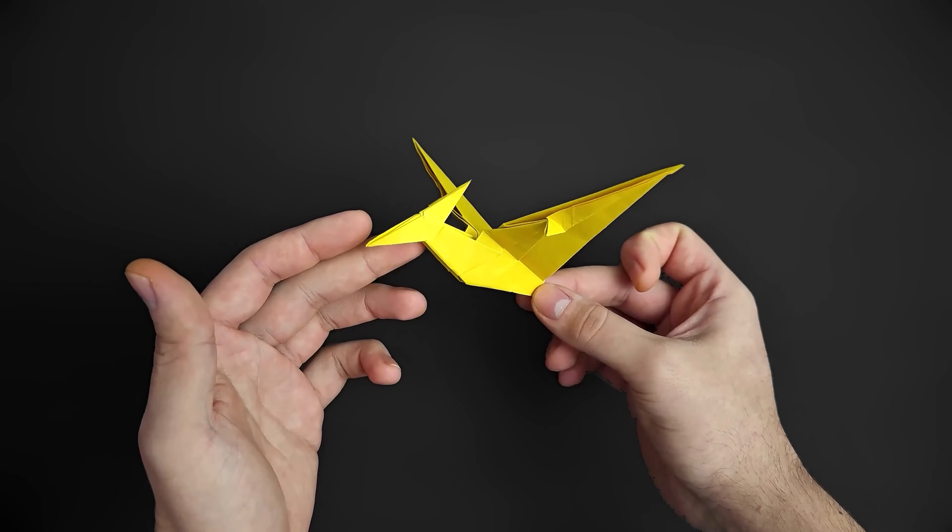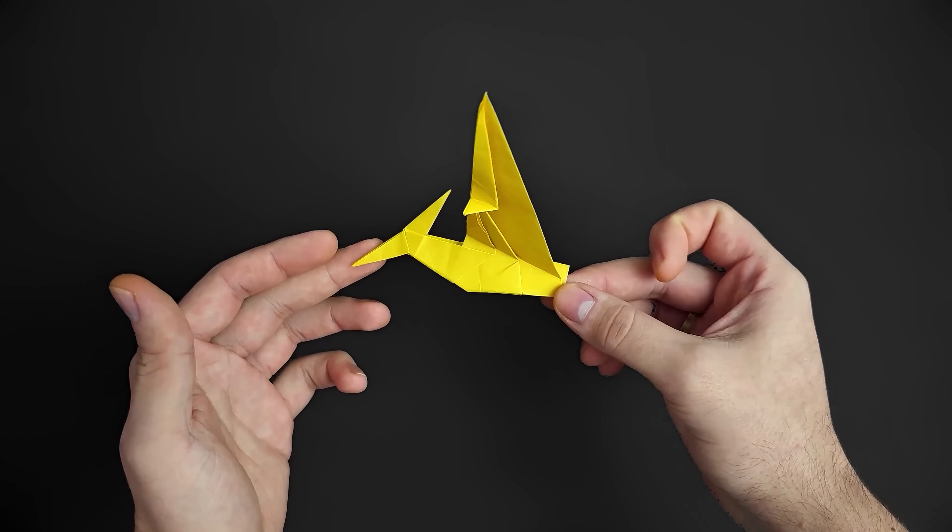To make this origami you'll need a square piece of paper that can be any size you want. In this video I'll use 20x20cm, about 8x8 inches.